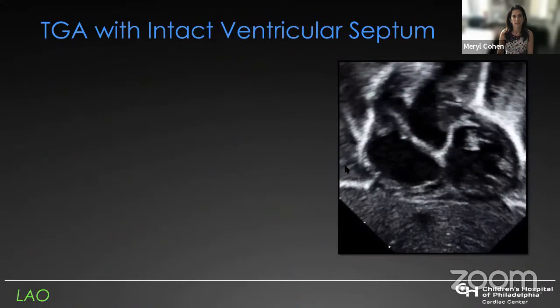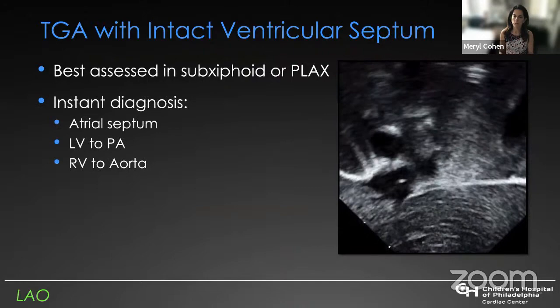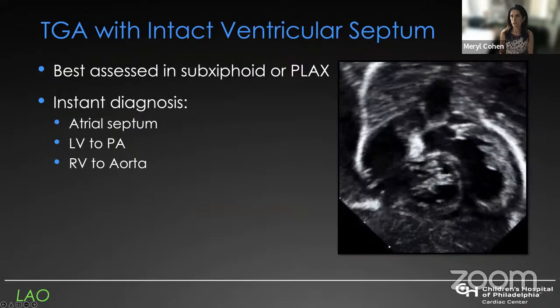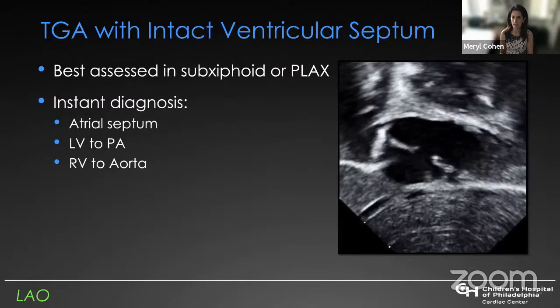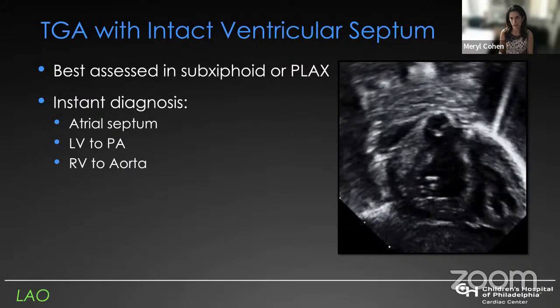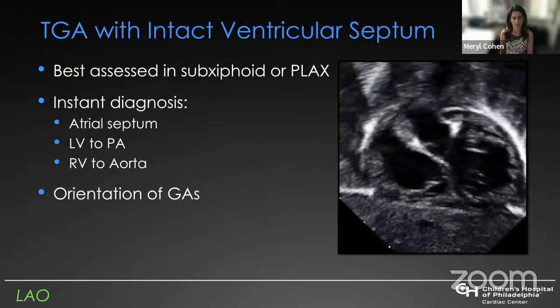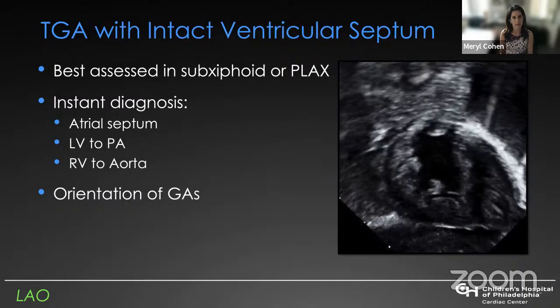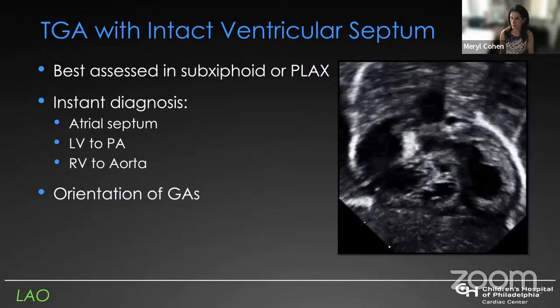In transposition you can have any conal anatomy: sub-aortic conus only, bilateral conus, bilaterally absent conus, or the very rare case of transposition with a posterior aorta, where patients tend to have sub-pulmonary conus only. We start our imaging in the sub-xiphoid view, but you can also start in the parasternal view. When you do, you'll make an instant diagnosis of transposition. You can see the atrial septum; in this particular case the atrial septum primum is flopping around because this patient has had a balloon septostomy. You'll also immediately see the pulmonary artery arising from the left ventricle and the aorta arising from the right ventricle — instantaneous diagnosis.